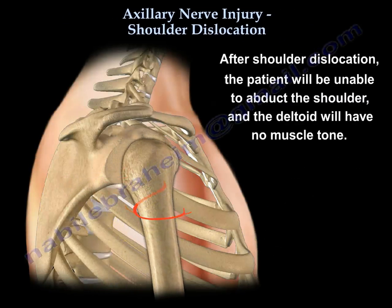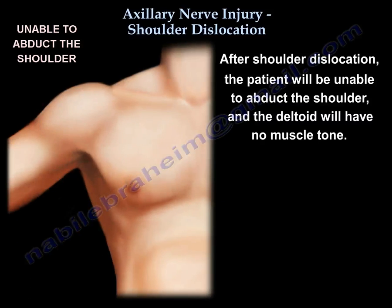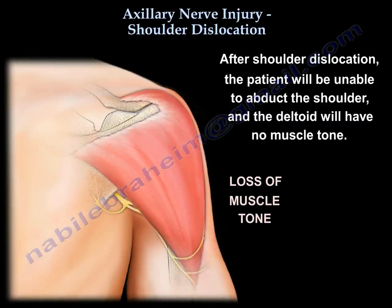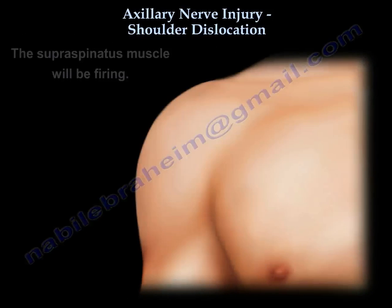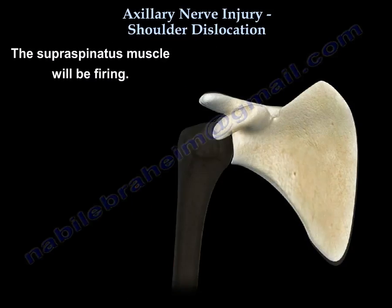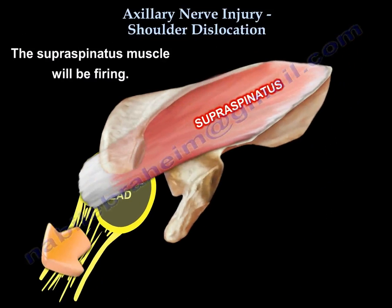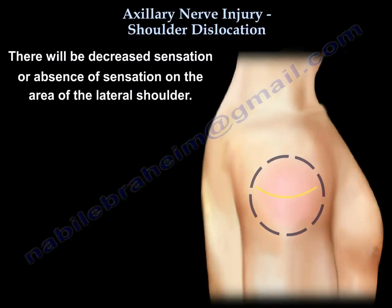After a shoulder dislocation, the patient will be unable to abduct the shoulder and the deltoid will have no muscle tone. The supraspinatus will be firing. You will also have decreased sensation or absence of sensation on the lateral shoulder.